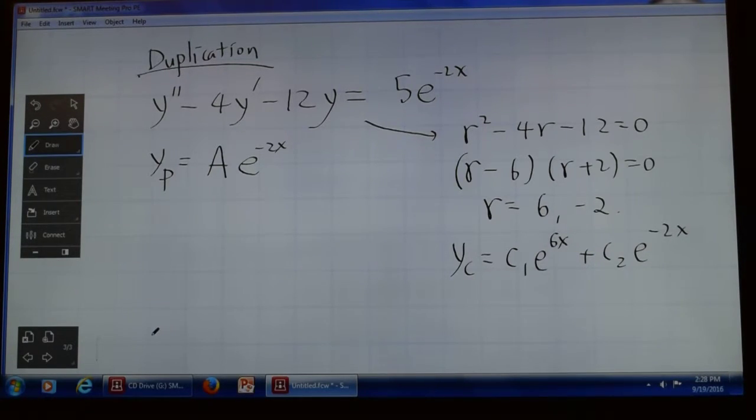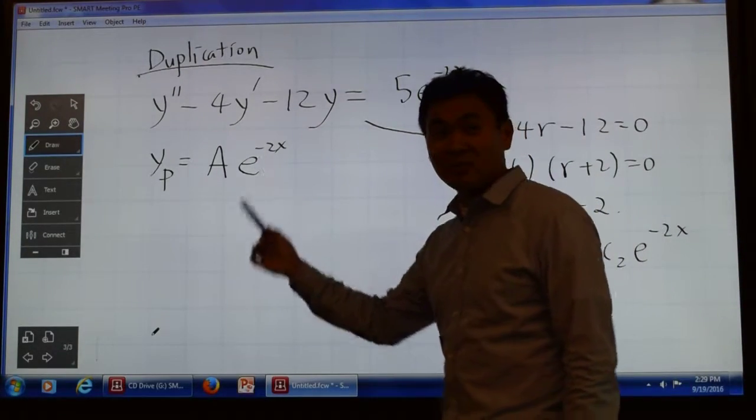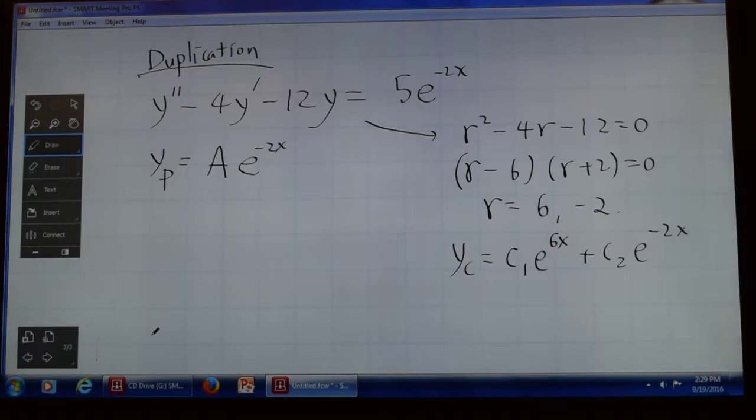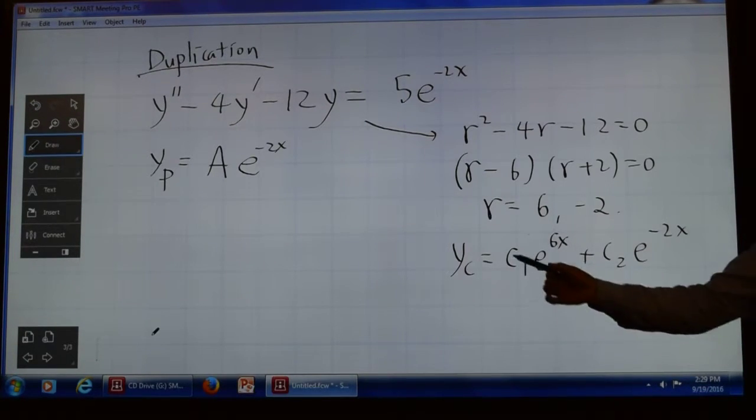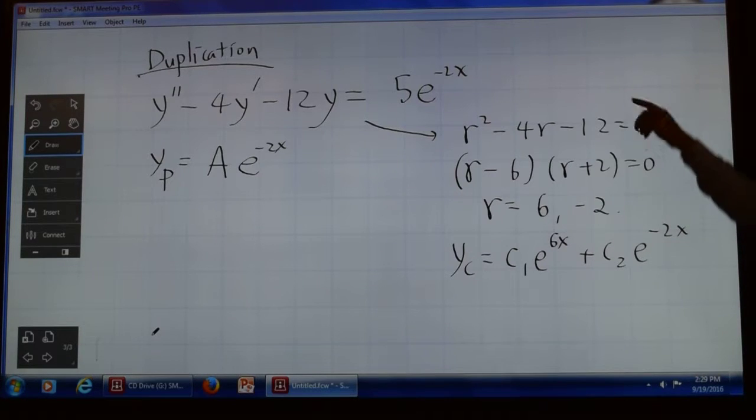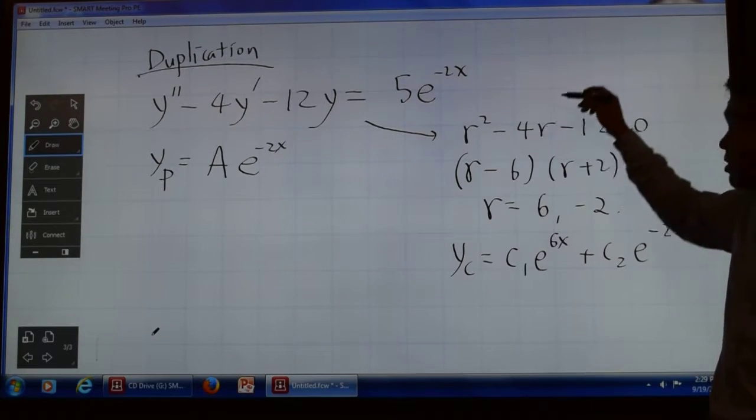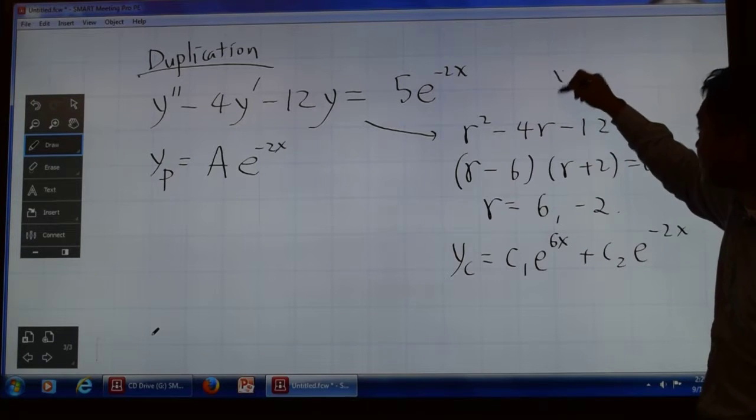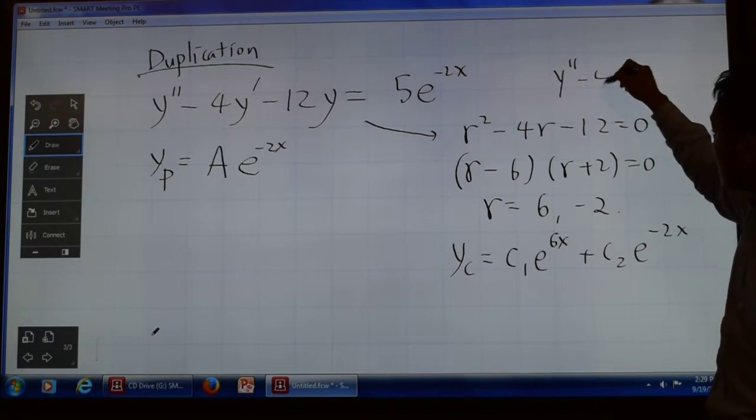Now here's a question. After getting your yc, you should check for duplication. Is any of the functions in your particular duplicated in the complementary? Yes. E to the negative 2x, you see, here it is here too. Now let me see what this is really saying. It's saying that if I plug this function on the left side, what are you supposed to create? Zero because this entire thing is for the complementary differential equation, which is the homogeneous case.